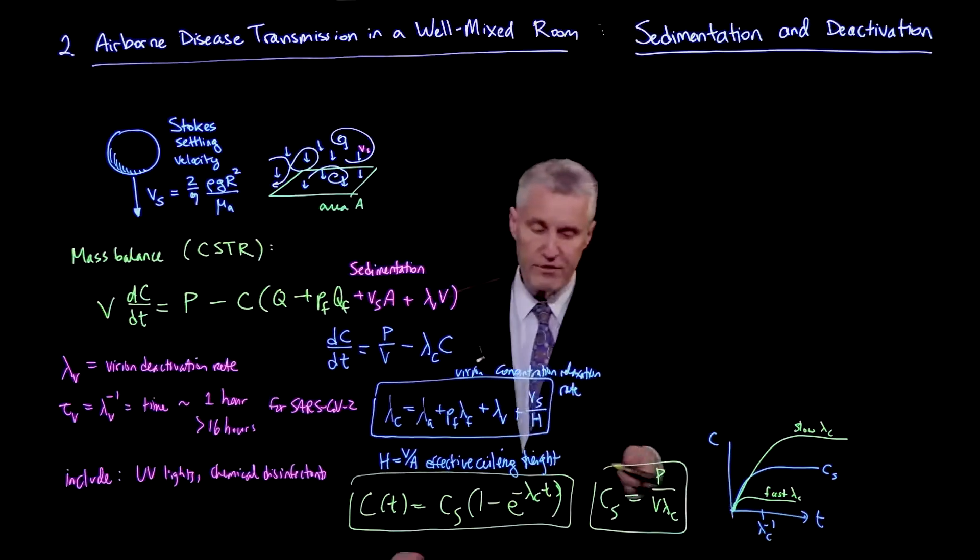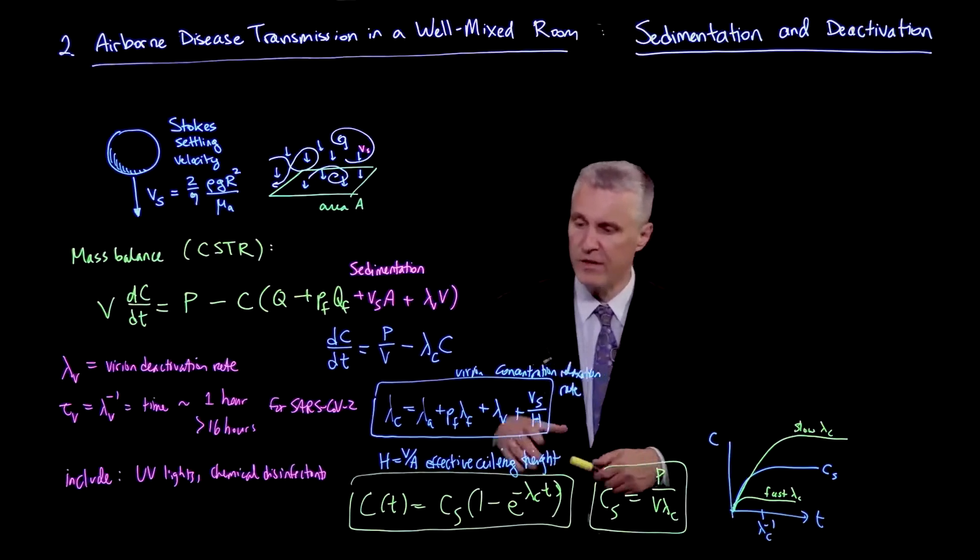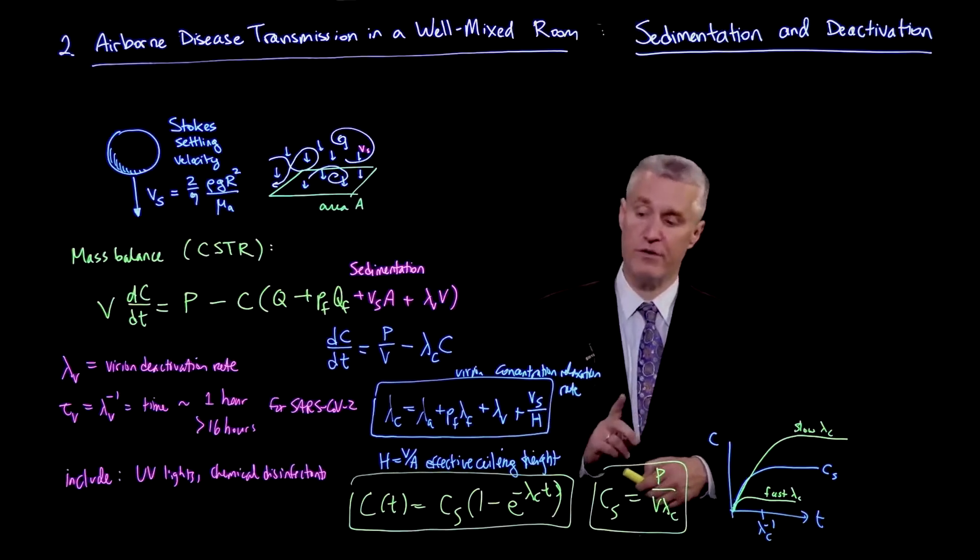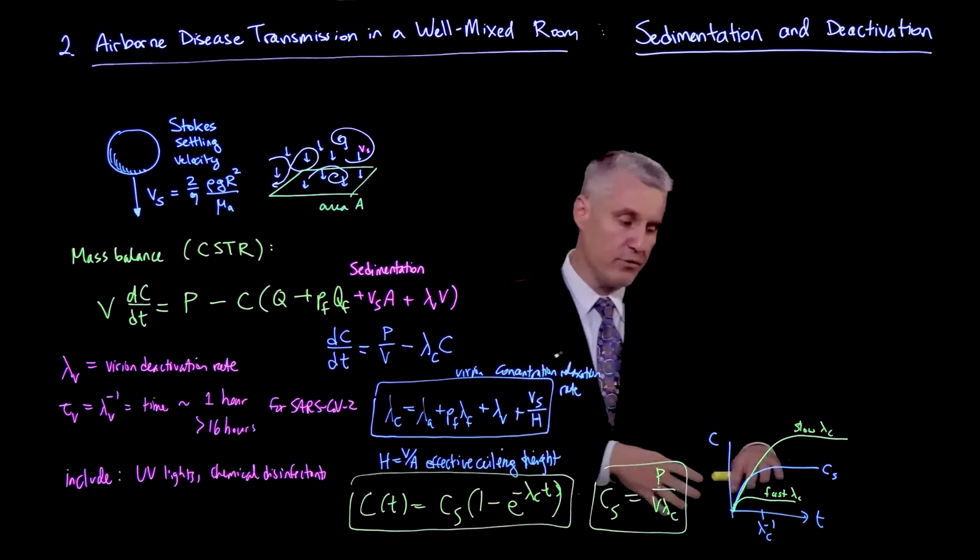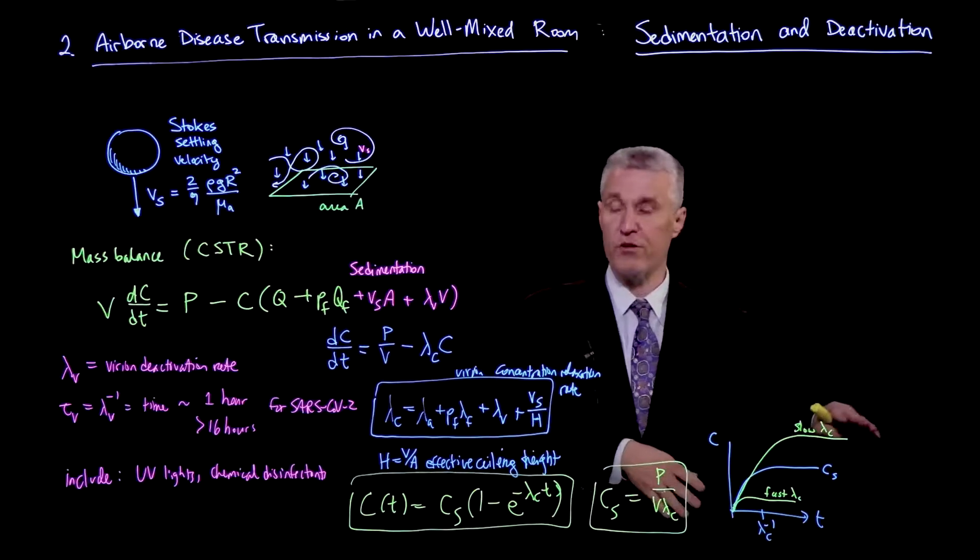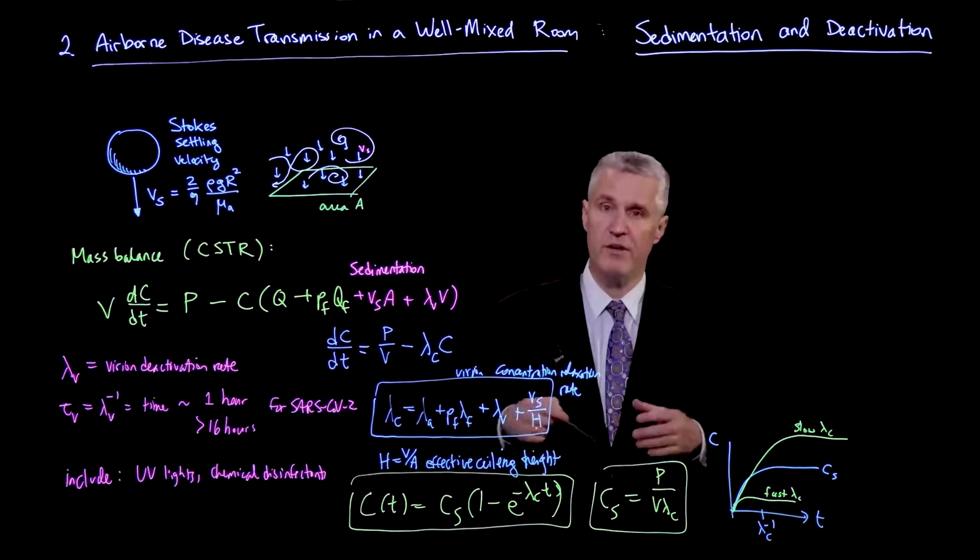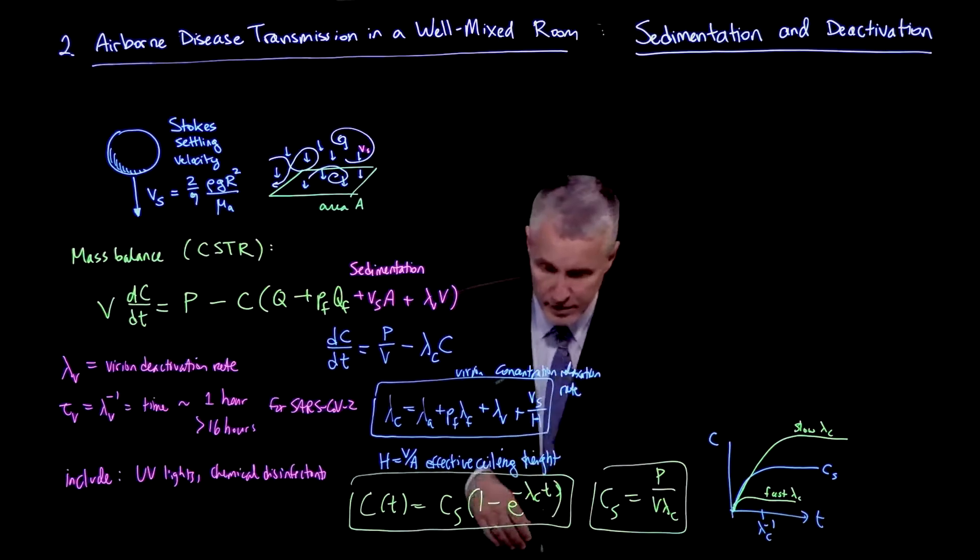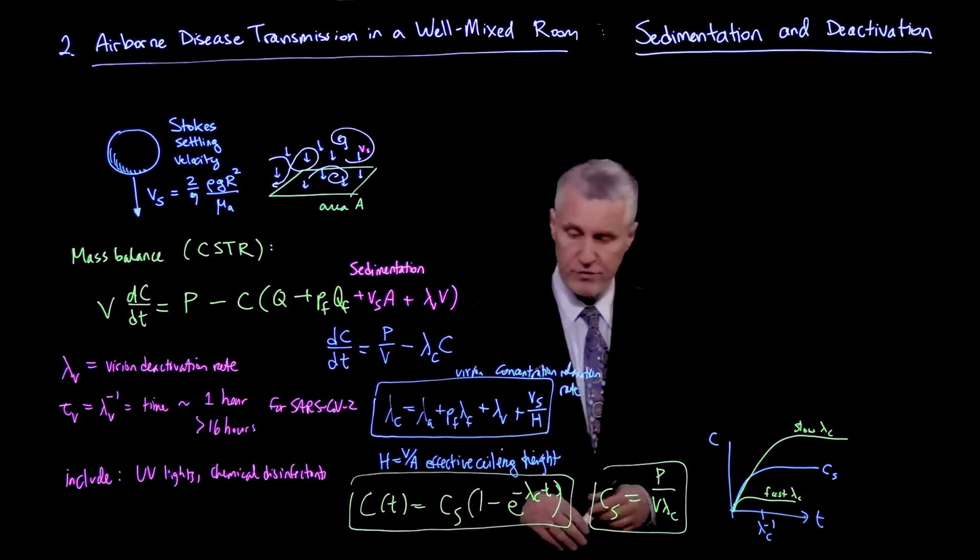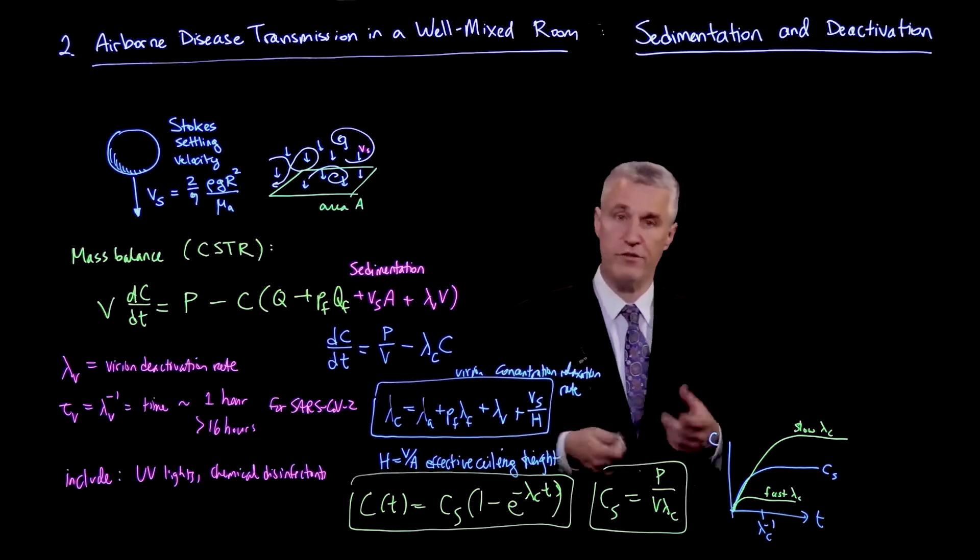So whenever lambda_C is not a large value, you have a slow process, but it also builds up a lot higher. So this effect of lambda_C is very important to keep in mind, especially because these parameters here are not necessarily constants. In particular, Vs has a very strong dependence on size. So these different saturation curves are, at the very least, dependent on the size of the droplets that we're talking about.